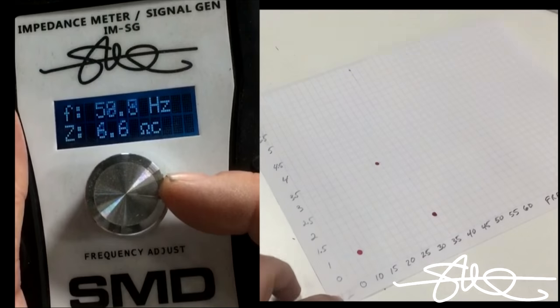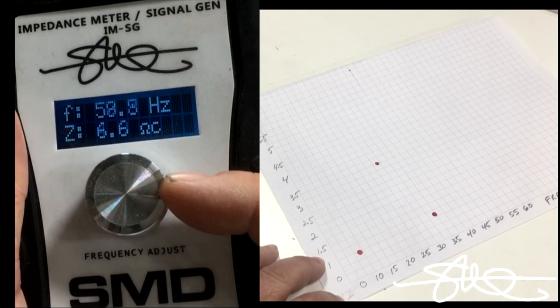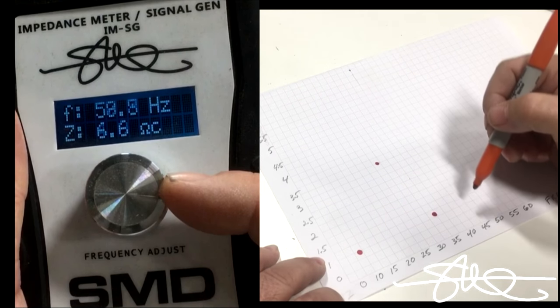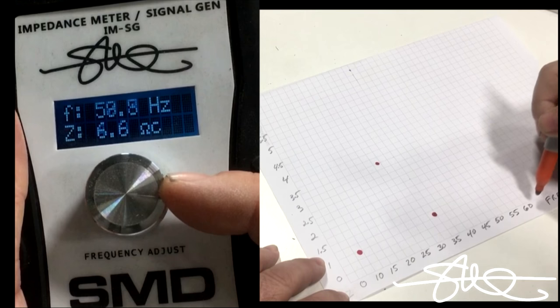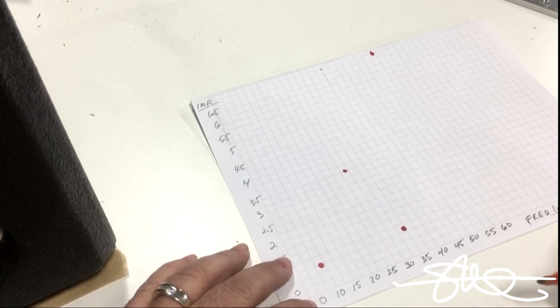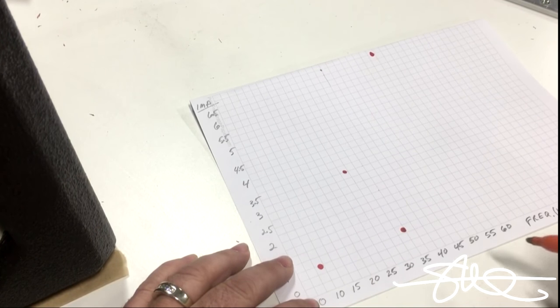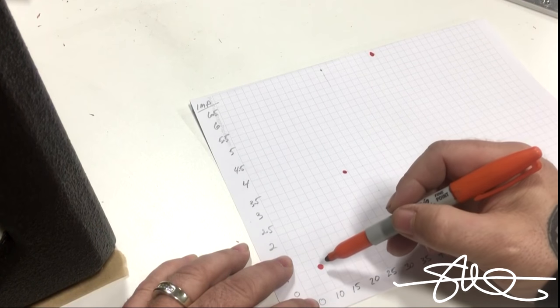And of course it shoots up like a rocket to 58.8 at 6.6 ohms. So now you can take all the numbers in between and get a really accurate graph.